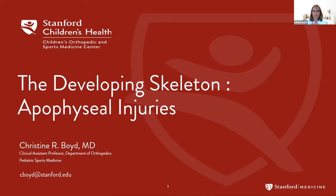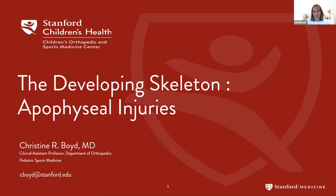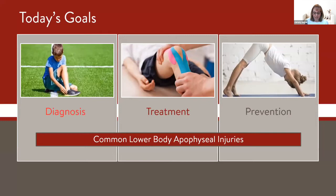I encourage lots of questions and will take a break about a third of the way through. The basic structure today is I'm going to talk about apophysial injuries in general, and then break down probably five of the most common ones we see. Today's goals are how do you diagnose these injuries, how do you treat them, and things we can do to prevent them, especially as we bring kids out of hibernation and back into sports.